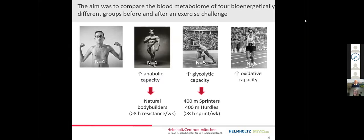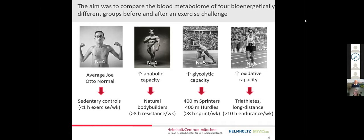A third group were endurance athletes that have a high oxidative capacity. For this group, we specifically recruited triathletes that train for long-distance competitions. The fourth group was a control group, sedentary for at least six months before the study and were allowed to do at maximum one hour of exercise per week.